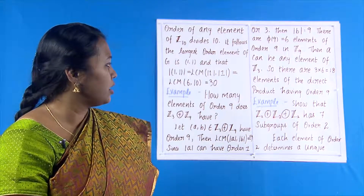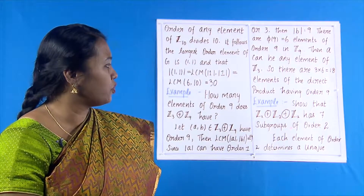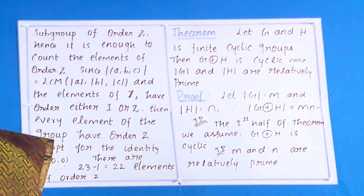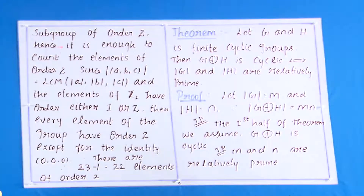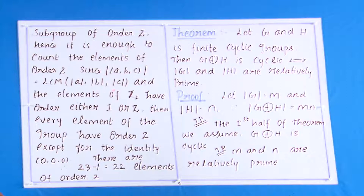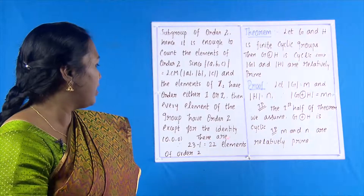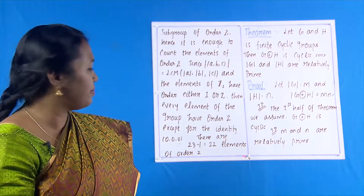Let us show that the direct sum Z₂ × Z₂ × Z₂ has seven subgroups of order 2. Each element of order 2 has a unique subgroup of order 2, so it suffices to count elements of order 2. Since the order of (a, b, c) equals LCM(order of a, order of b, order of c), and elements of Z₂ have order either 1 or 2, every element except the identity (0, 0, 0) has order 2. There are 2³ − 1 = 7 elements of order 2.